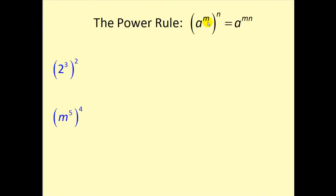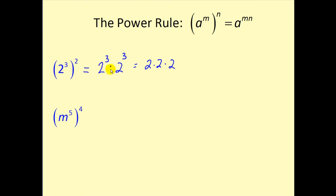The power rule states that we have a raised to the power of m, all raised to the power of n — this equals a to the m times n power. Before we apply this, let's expand to verify. If we have three cubed raised to the second power, something squared means multiplied by itself two times, so we have three cubed times another three cubed. We count the factors and get two to the power of six. Applying the power rule, we have a power raised to a power and multiply: two to the three times two gives us two to the sixth — the same answer.